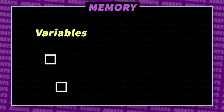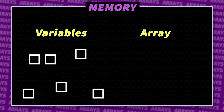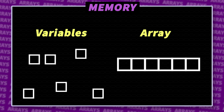When you declare multiple variables, they're essentially assigned random areas in computer memory — sort of like having your shoes all over the place with no obvious organization pattern. But when you declare an array, you get one contiguous chunk of memory, divided according to the array size. It's just like a shoe cubby — we could call it a data cubby.